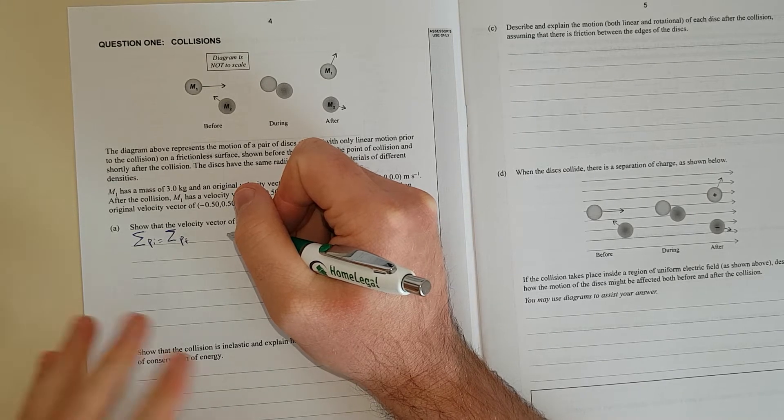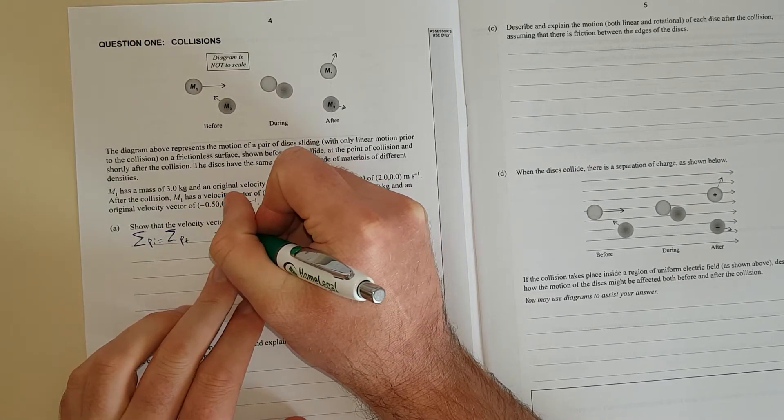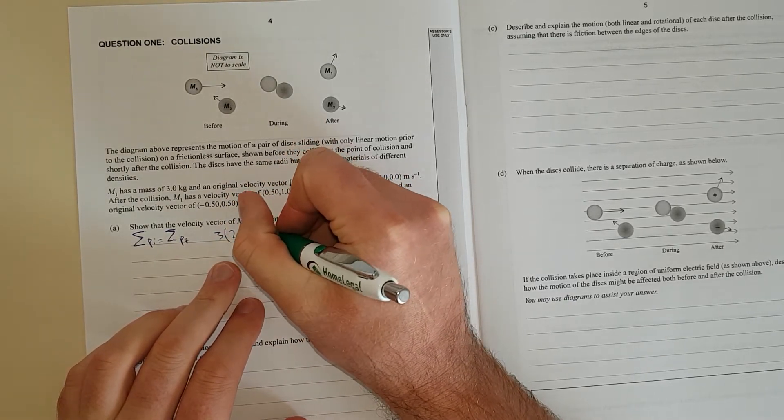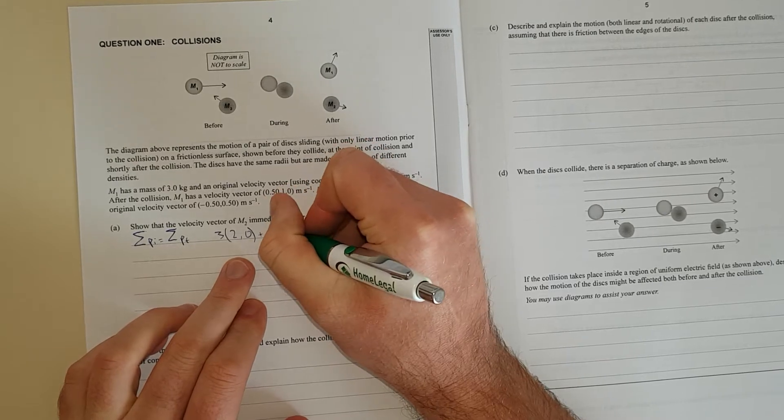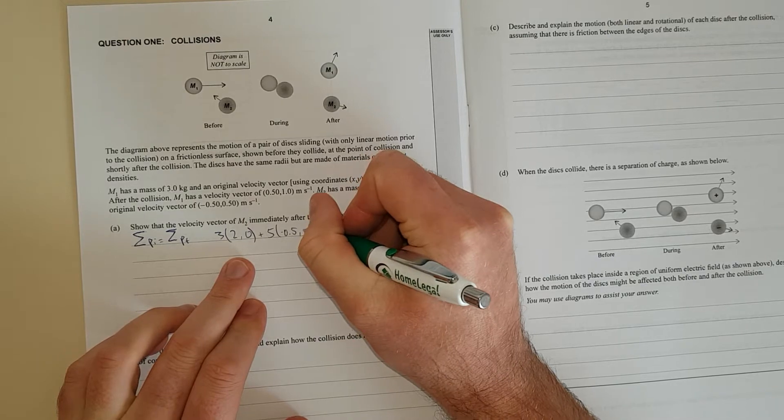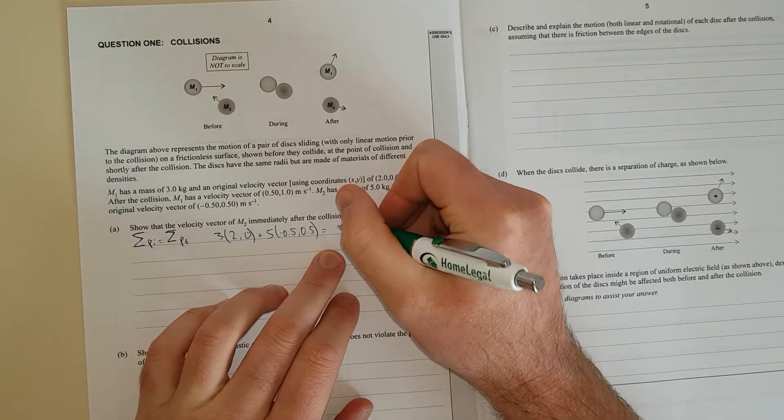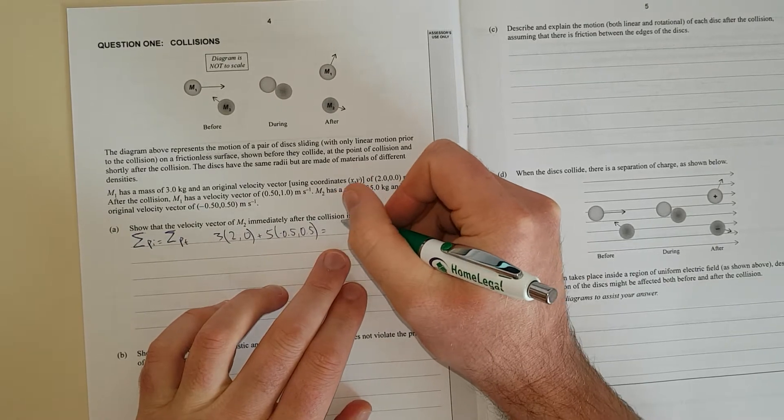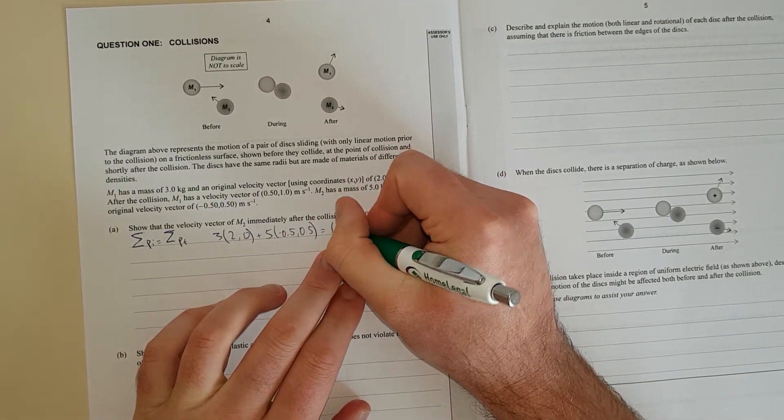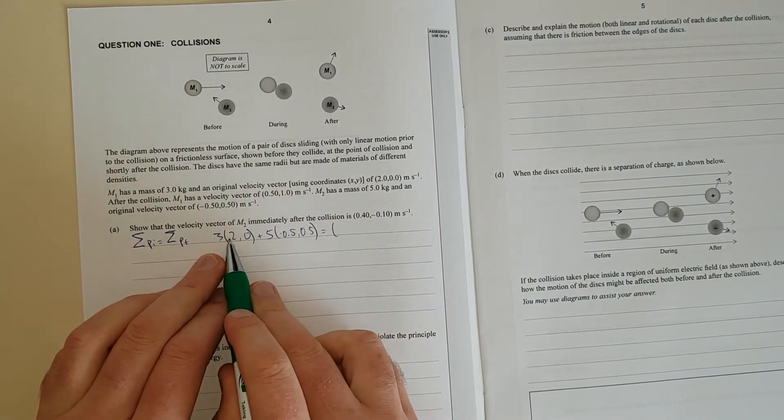We're going to keep our coordinates in their vector form. So we have the mass 3 kg, this is M1, and its initial velocity is (2, 0), plus M2 with mass 5 kg, and its initial velocity is (−0.5, 0.5). That should equal the total momentum. I'm going to add all these together.